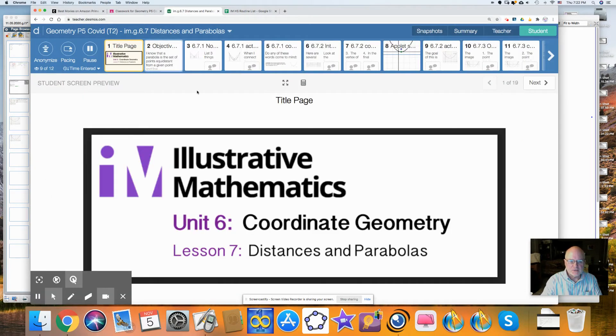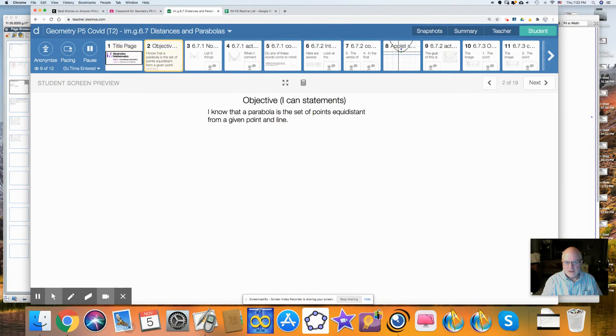And now we look at today's lesson, which is, again, from Illustrative Mathematics, our textbook, The Coordinate Geometry, Unit 6. And we're on Chapter 7, Lesson 7, Distances and Parabolas. By the end of the lesson, you will know that parabolas are a set of points equidistant from a given point called the focus and a line called the directrix.